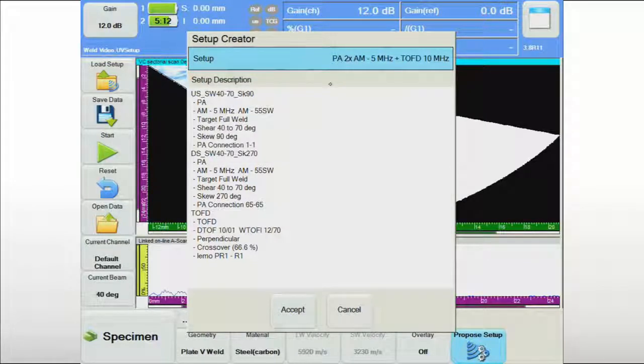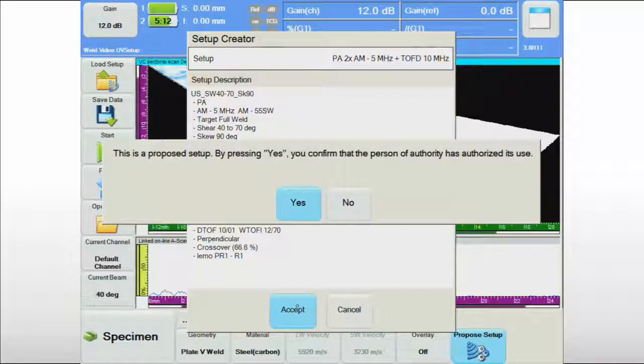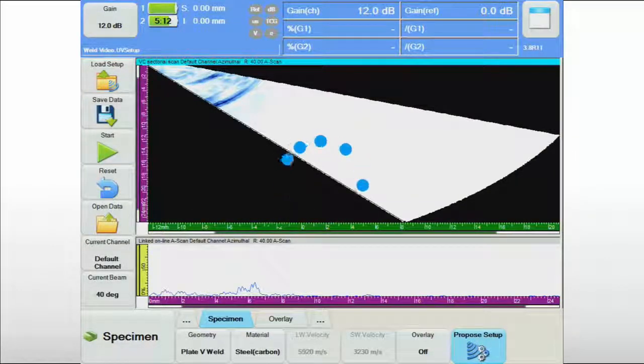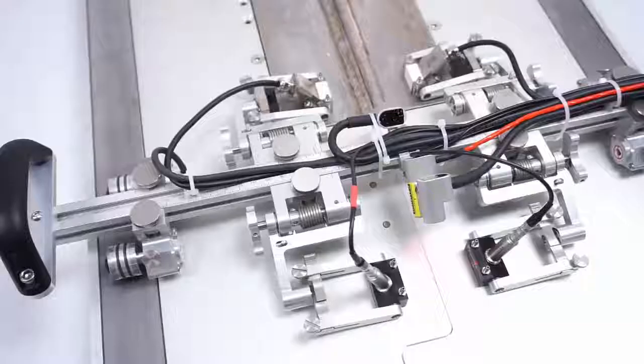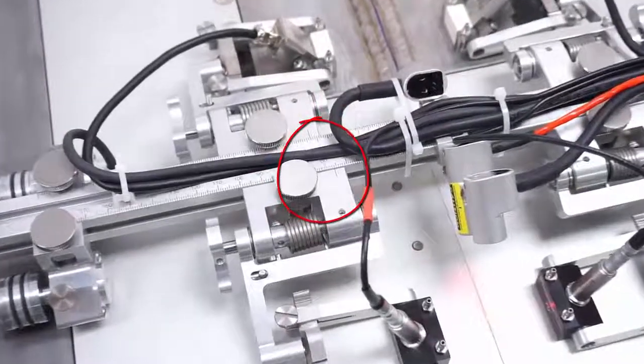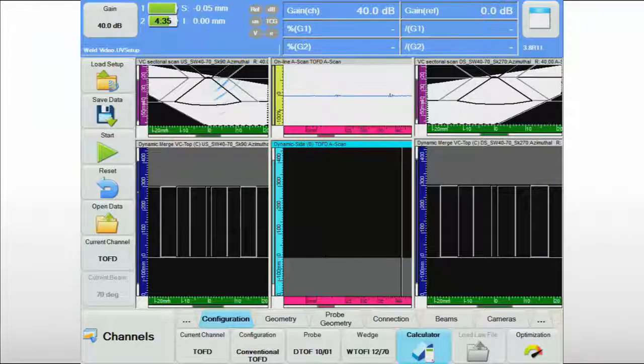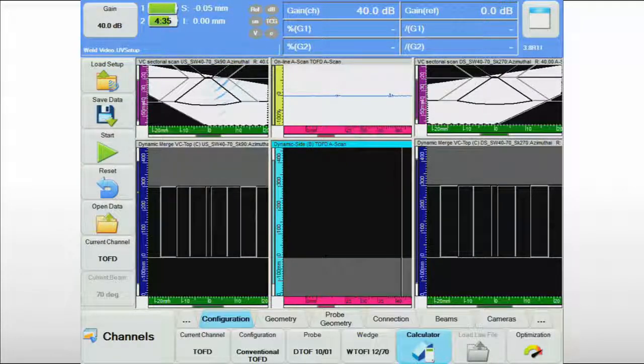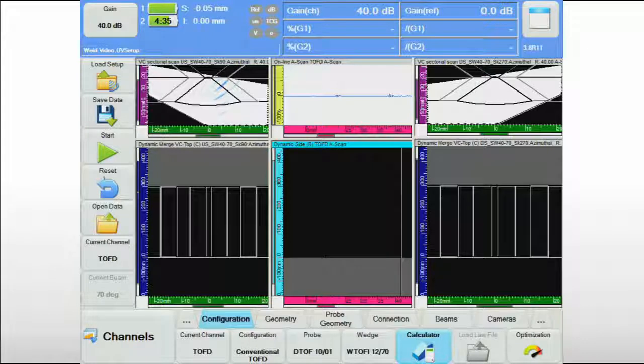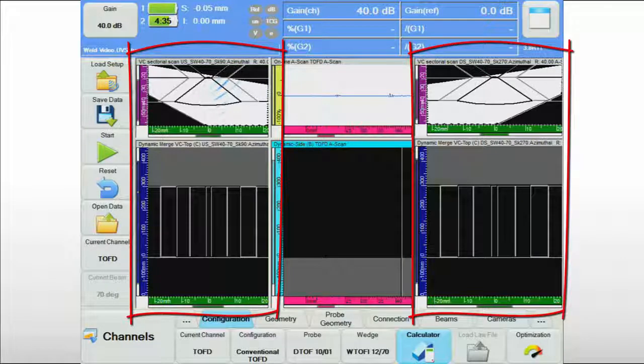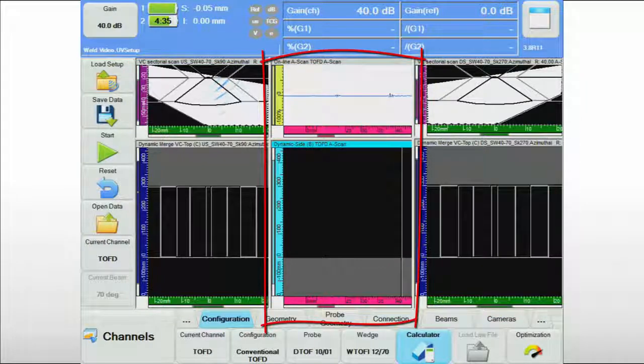Based on the geometry, the software will propose a code-compliant setup combining appropriate probes and wedges. As soon as the operator confirms his agreement with the proposed configuration, the software will indicate how to position each of the probe holders on the weld crawler. The basic UT parameters for the two PAUT and the TOFD channels will be automatically set at values that allow for optimum detection capability and complete coverage of the examination volume. The software will also create a practical display layout for the inspection, showing the PAUT channels on either side of the weld and the TOFD channel in the middle.